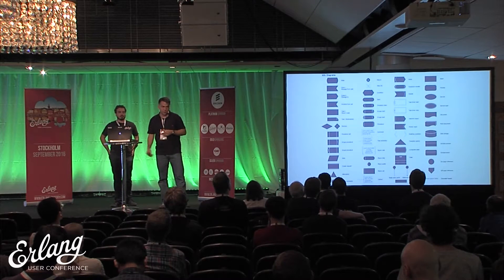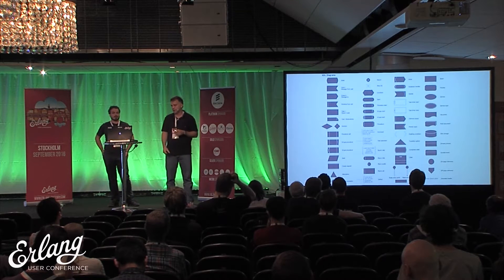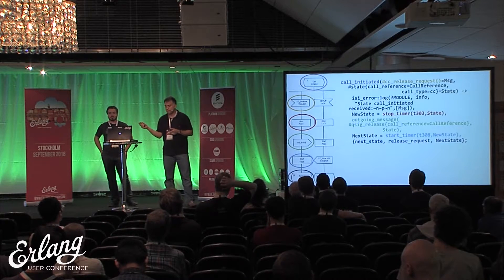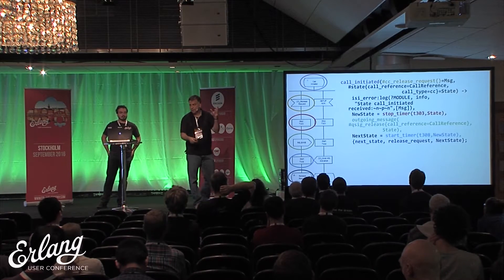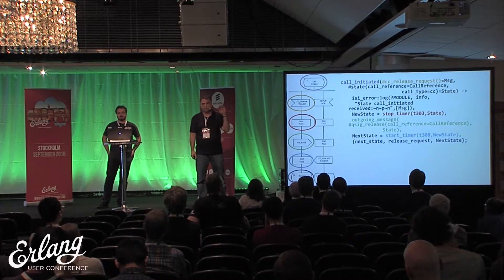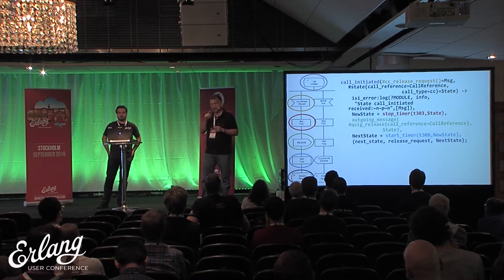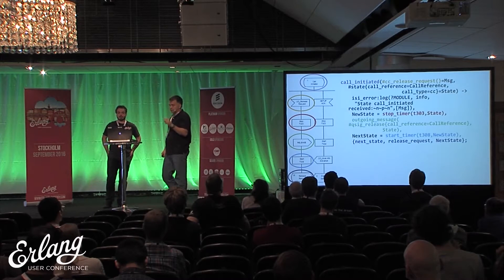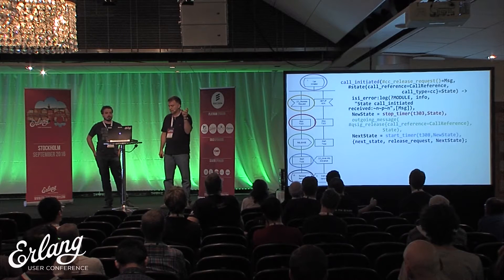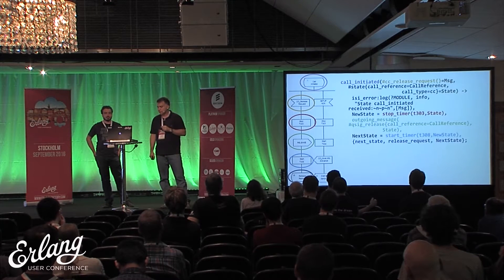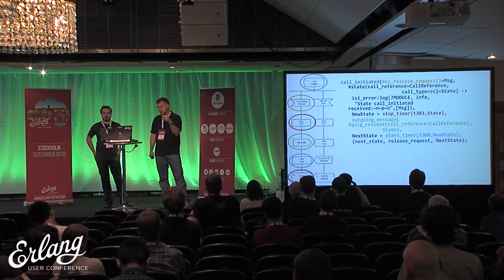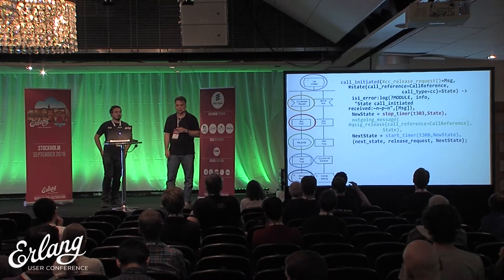SDL has a lot of components in that graph, but there are only a few things that map really well to Erlang. This is an example of the actual QSIG standard — I copied some code we actually used from our Erlang implementation and tried to map it here so you could see exactly how easy it is to map. For instance, the state definition to the events being translated, then you have a timer — a stop timer that was put as T303 for the QSIG — and then there's a release message. You can basically follow this quite easily in the code to the graph.